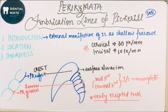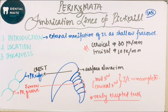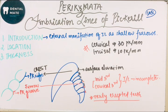This is it about the imbrication lines of Pickerill, or perichymeta — a surface structure of enamel. Don't forget to like, share, and subscribe to my channel and hit the bell icon. Do let me know in the comment section if this video helped you, as this boosts me to make even better videos. Stay tuned, keep visiting, thank you.